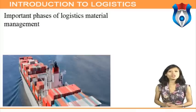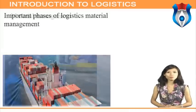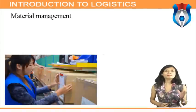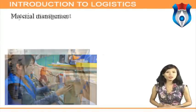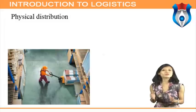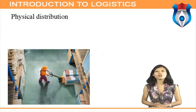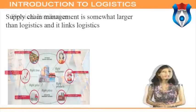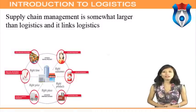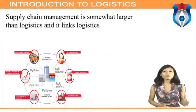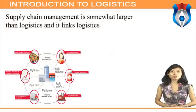Important phases of logistics movement management are: Material Management — the timely movement of raw materials, parts, and supplies; Physical Distribution — the movement of the firm's finished products to customers; and Supply Chain Management — which is somewhat larger than logistics and links logistics more directly within the user's total communication network and with the firm's engineering staff. It includes manufacturers and suppliers, but also transporters, warehouses, retailers, and customers themselves.